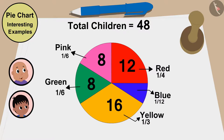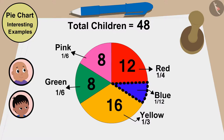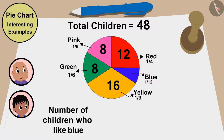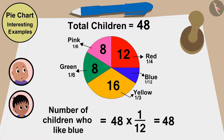And, Raju, I like blue color a lot. But in this pie chart, the share of children who like blue is the smallest. Let me find out how many children like blue like me. The number of children who like blue is 48 times one by 12, or 48 divided by 12. That is, 4. Out of whom, I am one.